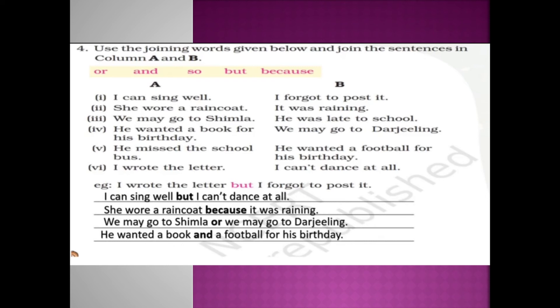Next, use the joining words given in the yellow box and join the sentences in column A and column B. You have to merge them using the connecting words. Here are the answers: 'I can sing well, but I can't dance at all.' 'She wore a raincoat because it was raining.' 'We may go to Shimla, or we may go to Darjeeling.' 'He wanted a book and a football for his birthday.'